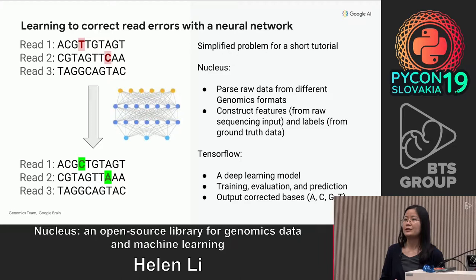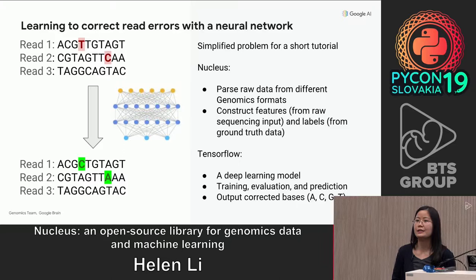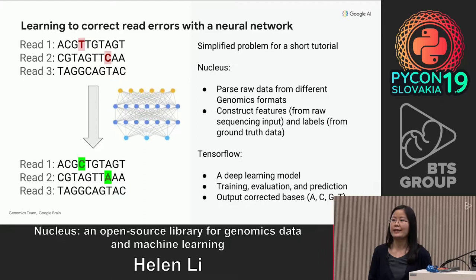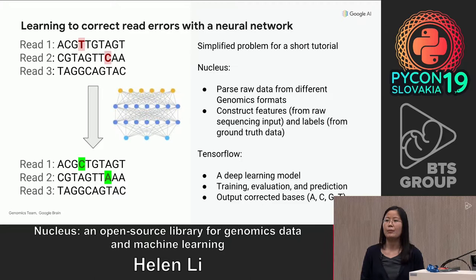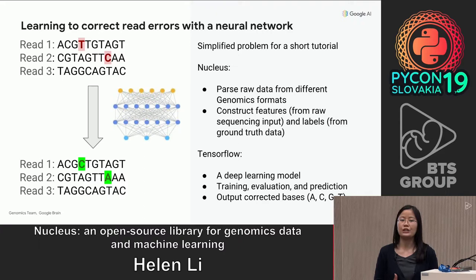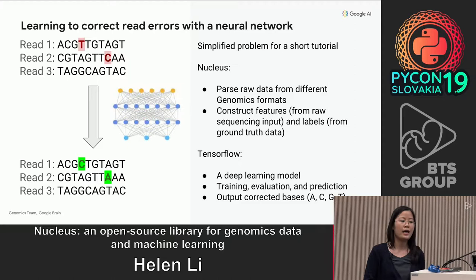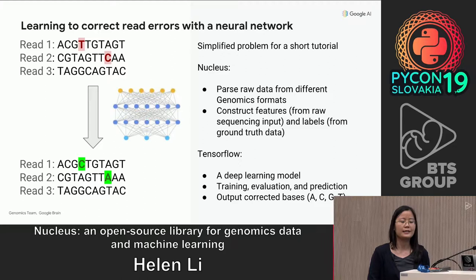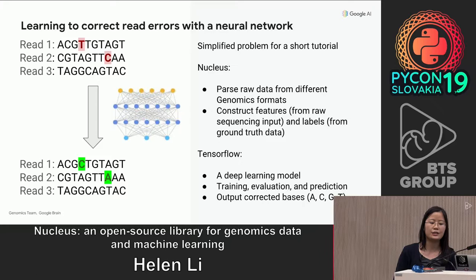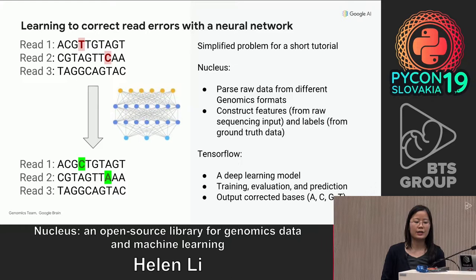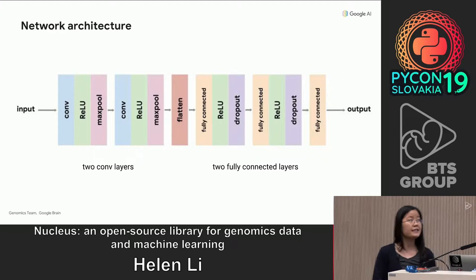Our goal for this tutorial is: given a bunch of these reads, construct a neural network and correct the errors in these reads to produce reads without those errors. Correcting errors in next generation sequencing reads is an open research problem. Here we will make a few assumptions to simplify the problem. To solve this using deep learning, we need three things: we need to extract features from the input data, we need ground truth data to construct the labels, and we need a machine learning model that learns from the data. We'll illustrate how we can use Nucleus and TensorFlow together to accomplish those goals — specifically, using Nucleus to parse data from genomics data formats, construct features and labels, and then using TensorFlow to specify a deep learning model.